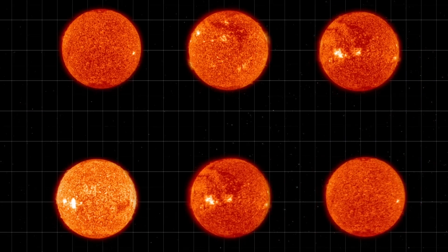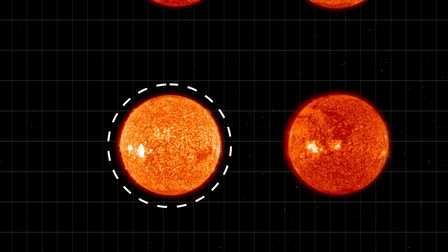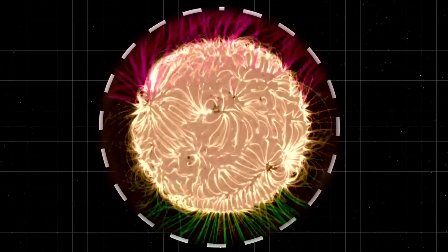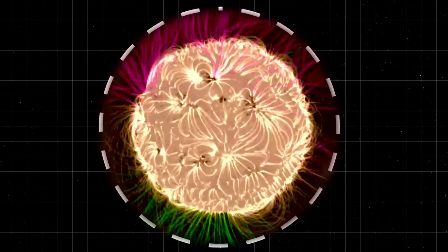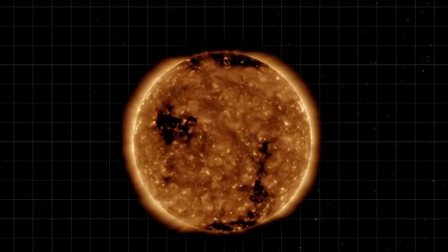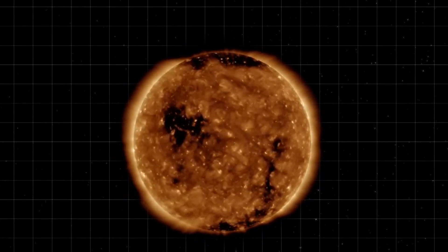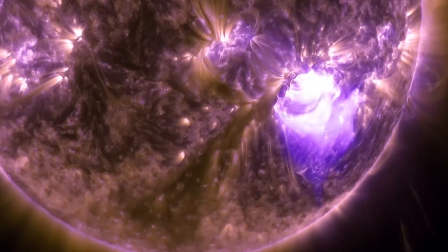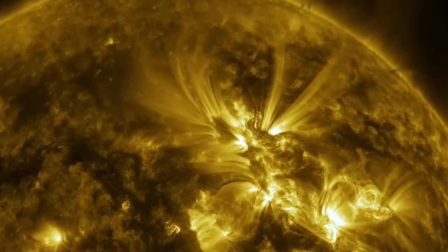The sun's magnetic field essentially resets itself, and the entire process begins again. But why does this happen every 11 years? Recent 3D simulations have shed light on this mystery. These models reveal that the sun's internal magnetic dynamo follows a predictable pattern driven by the interplay between convection currents and rotation.